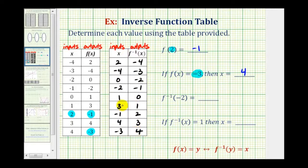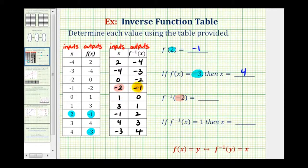This completed inverse table helps us answer the last two questions. To evaluate f inverse of negative 2, we look for an input of negative 2 in the inverse function table. The output is negative 1, therefore f inverse of negative 2 equals negative 1.